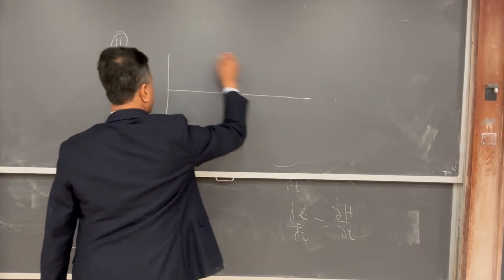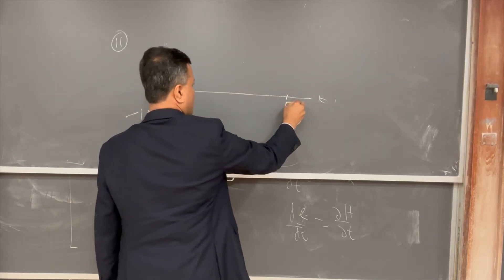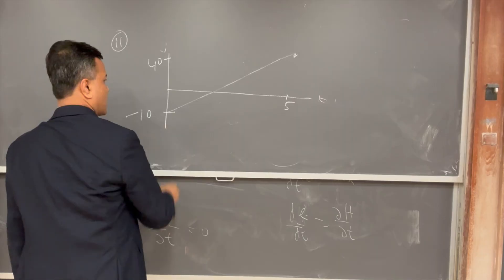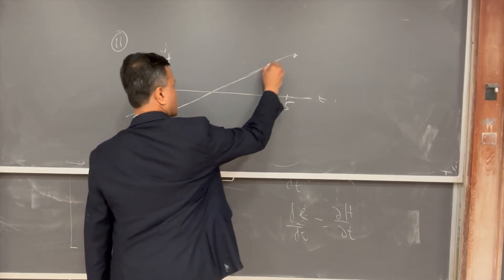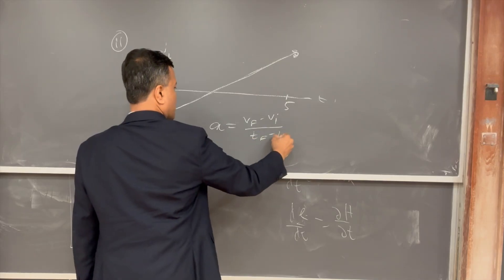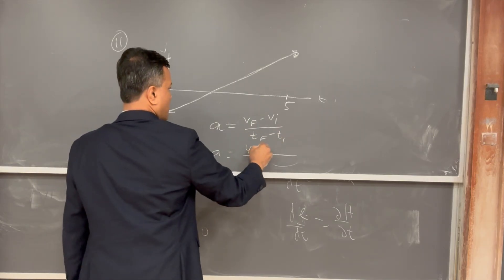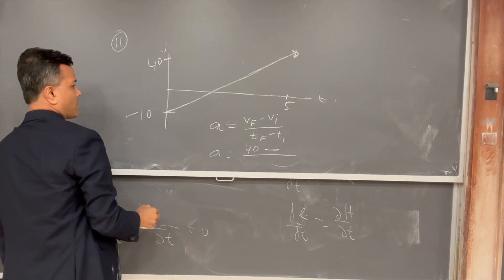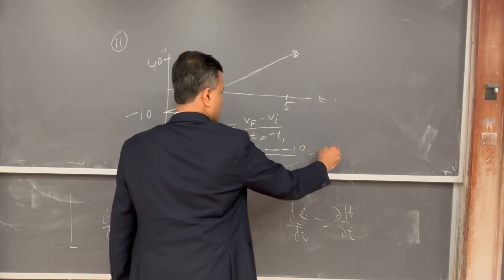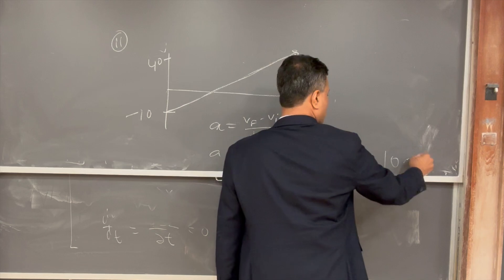Problem eleven: I have a v-t graph with points (0, −10) and (5, 40). Connect those two dots. The slope of a v-t graph is acceleration. So acceleration = (vf − vi) / (tf − ti) = (40 − (−10)) / (5 − 0) = 50 / 5 = 10 meters per second squared.